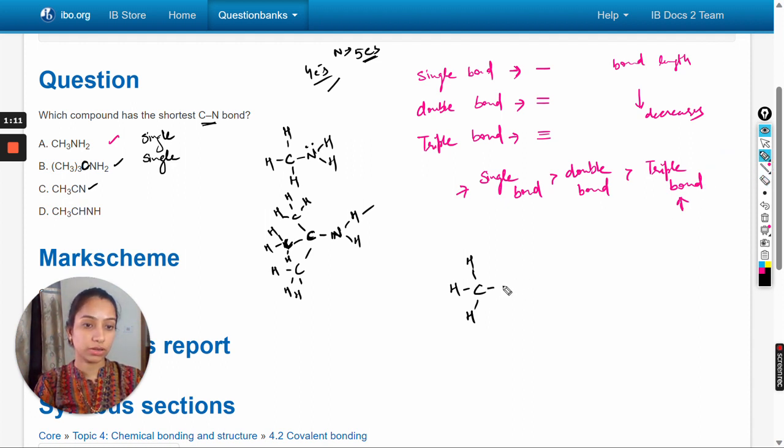There is one lone pair and carbon and nitrogen share three electrons, so there is a triple bond.